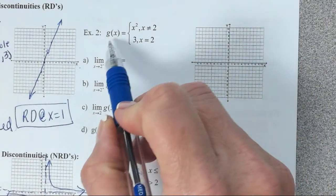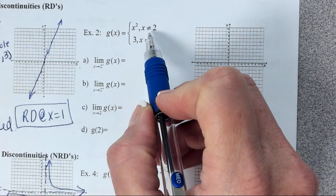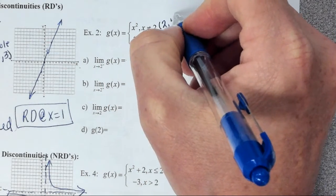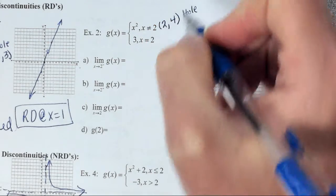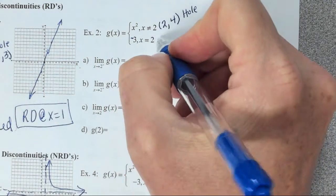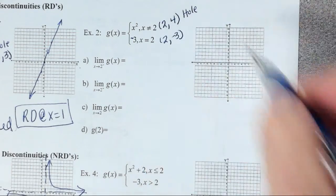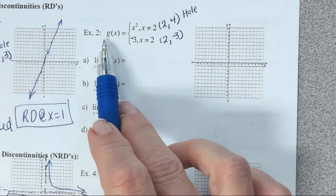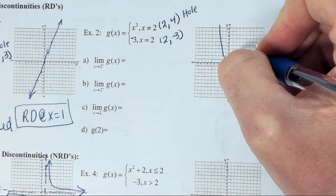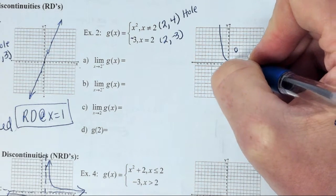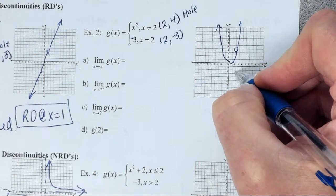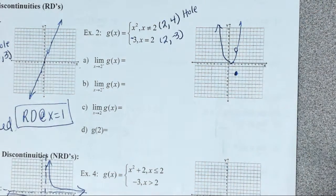So to graph this function, this is saying to graph Y equals X squared. That's a parabola. But we're not going to graph it when X is 2. So I am going to go ahead and plug 2 in here though. If I plug 2 in, I'm going to get 4. So I'm going to have a hole in the graph at that point. Let's go ahead and make this a negative just so that we can see it better when we graph it. So this is saying that when X is 2, we're going to have the point negative 3.